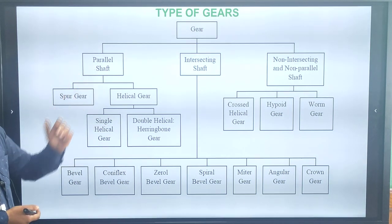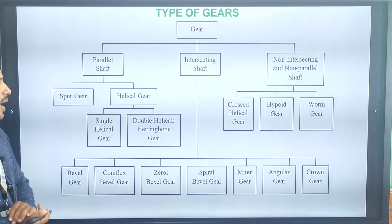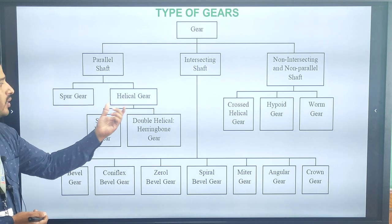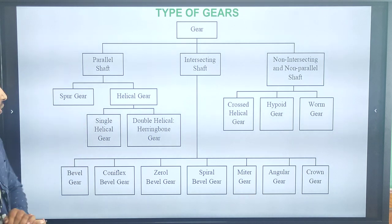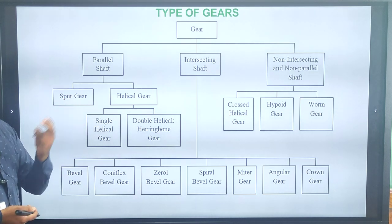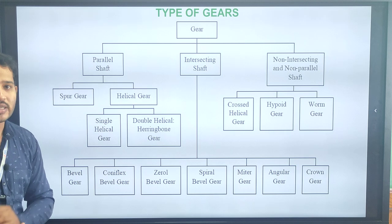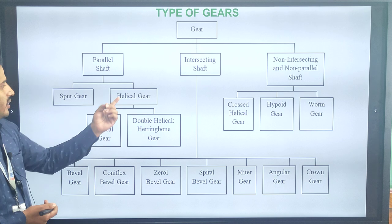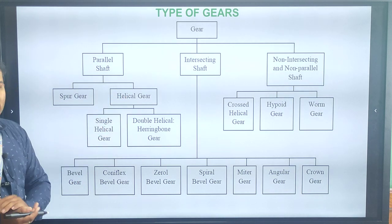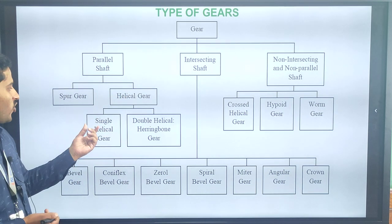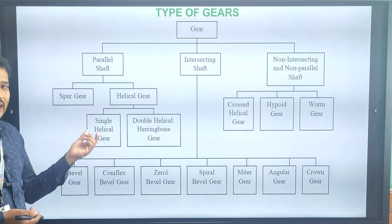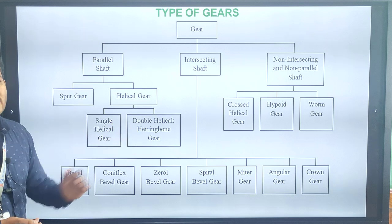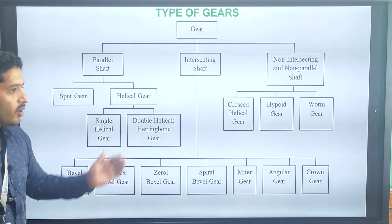Parallel shaft gear is broadly classified into two types: spur gear and helical gear. Spur gear is also broadly classified into two types — external spur gear and internal spur gear. Helical gear is also broadly classified into two types: single helical gear and double helical gear, sometimes called herringbone gear.